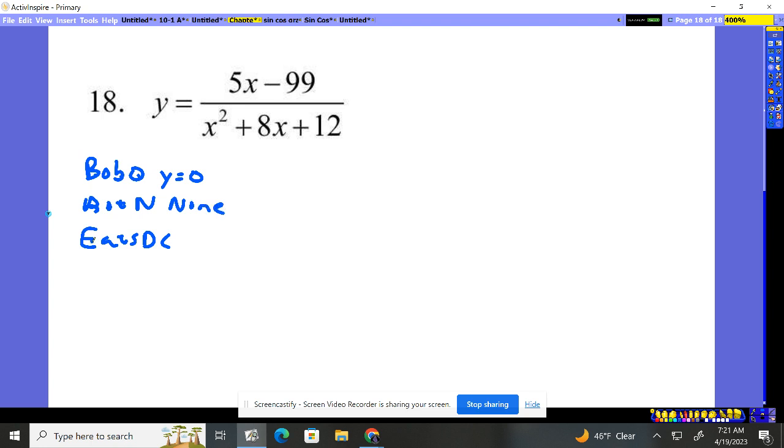None. If exponents are the same, we divide the coefficients, the numbers out in front. What's the case here? We have an x to the first up top, x to the second on the bottom. So it's bigger on the bottom.